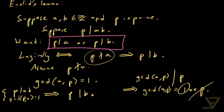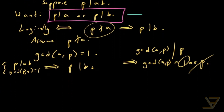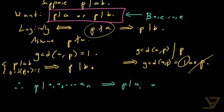And we can generalize this by induction, with this being the base case. So we can prove that if P divides A1 times A2 all the way through to AN, then P divides A1 or P divides A2 or all the way through to P divides AN. So that proves the general version of Euclid's lemma: if P divides a product of integers, P has to divide at least one of those integers.